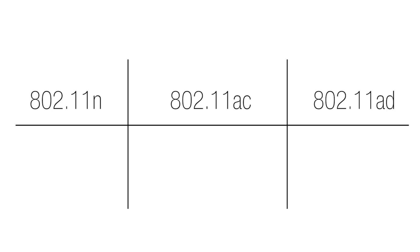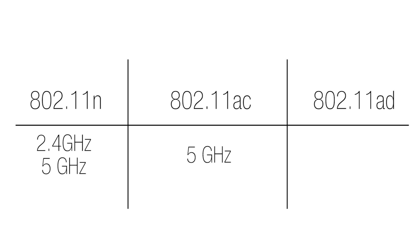The first one we have now mostly is Wireless N which uses 2.4GHz and 5GHz, then we also have Wireless AC which only uses 5GHz and is significantly faster than Wireless N, but now the new one is AD which actually uses 60GHz frequency. This much higher frequency has some advantages, but also some disadvantages as well, some pretty big ones actually.